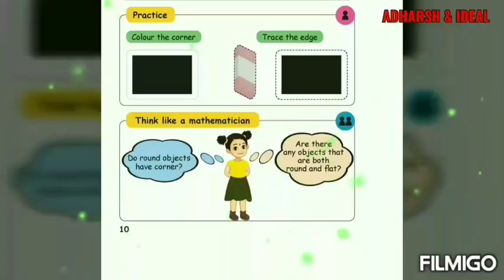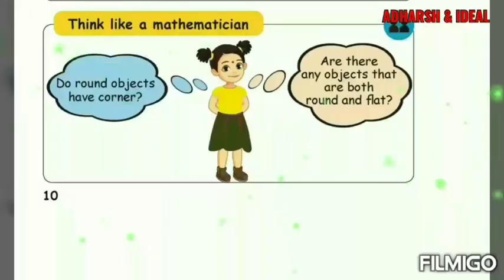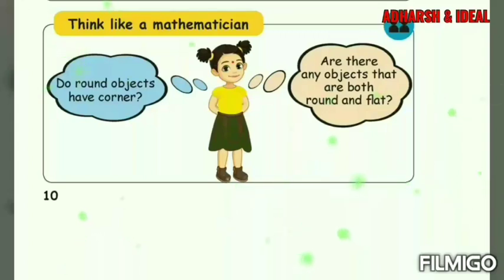See the practice. This is the homework for you all. Color the corner only — color it properly. Second: trace the edge. Connect the dots using a scale and pencil. Think like a mathematician: do round objects have corners? Two or more lines meet at a point is called a corner. Round objects have only a curved surface, so round objects have no line segments and no corners. Are there any objects that are both round and flat? Imagine a coin — the surface of a coin is both round and flat.